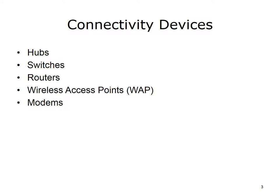We know we need a NIC in each node and media to connect the nodes. What do we connect the node to? We can use a hub, switch, router, wireless access point (WAP), or modem. These devices will allow nodes to talk to other nodes on a network.